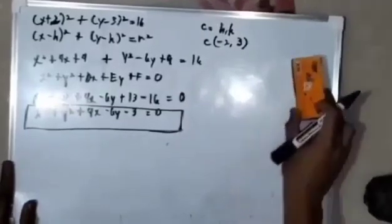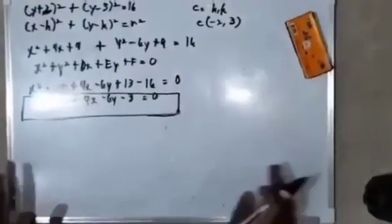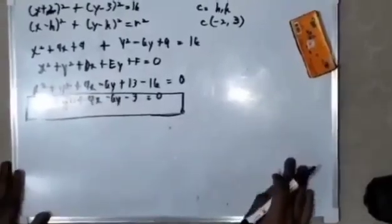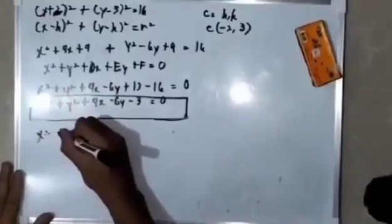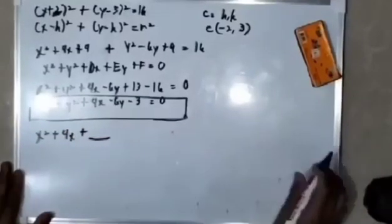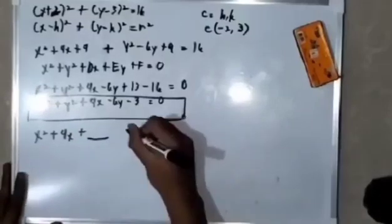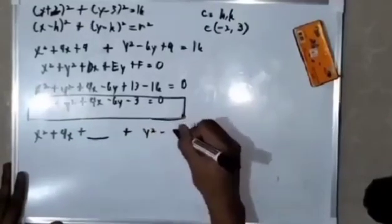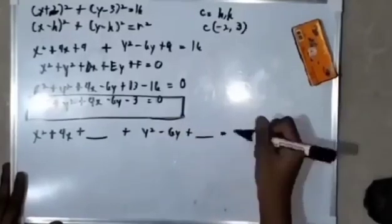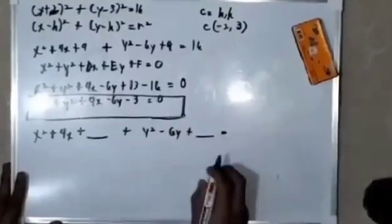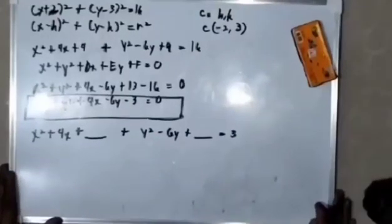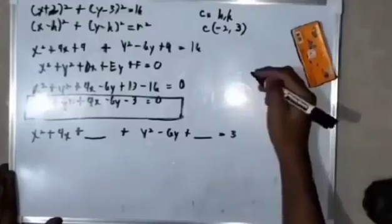If you want to convert it back to standard form, group the x variables and y variables: x squared plus 4x plus blank, plus y squared minus 6y plus blank, is equal to negative 3 moved to the other side becoming positive 3.